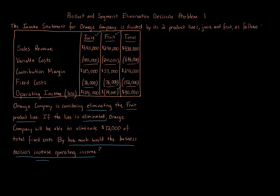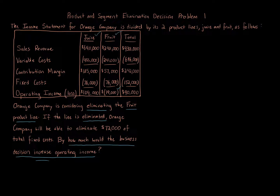Product and segment elimination questions are most of the time pretty straightforward. You're really focusing on a few key things: avoidable costs, contribution margin foregone, and fixed costs, because the information is broken up in that way.